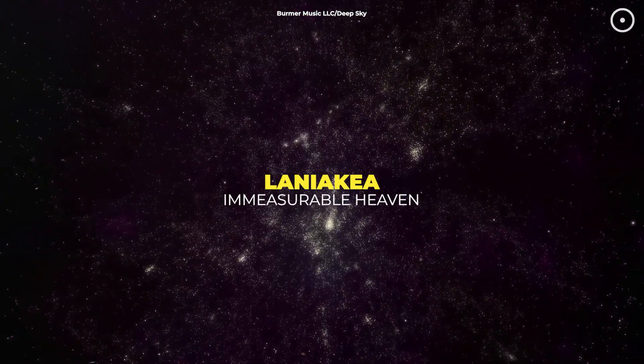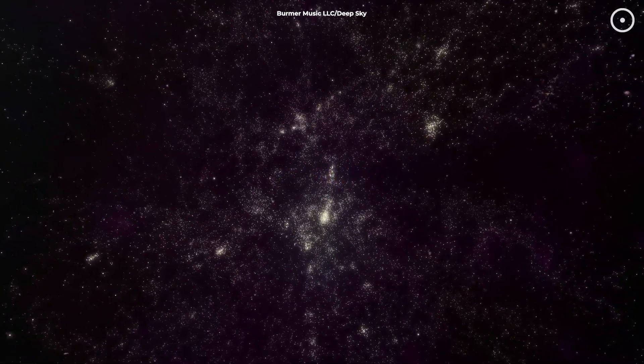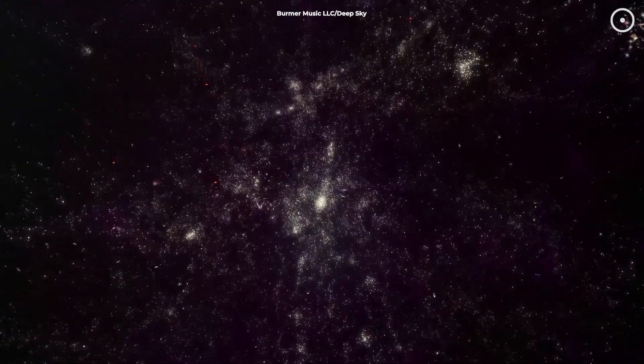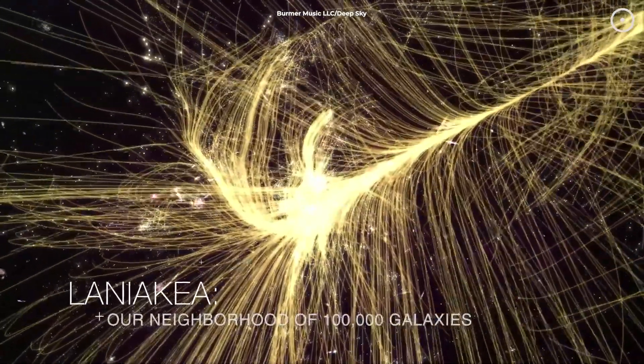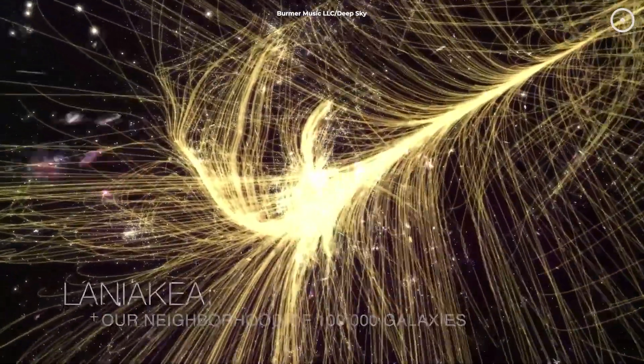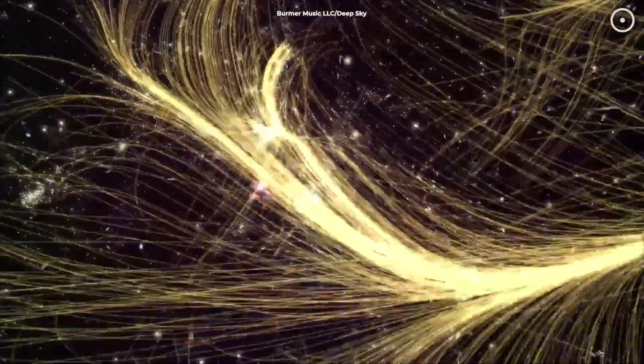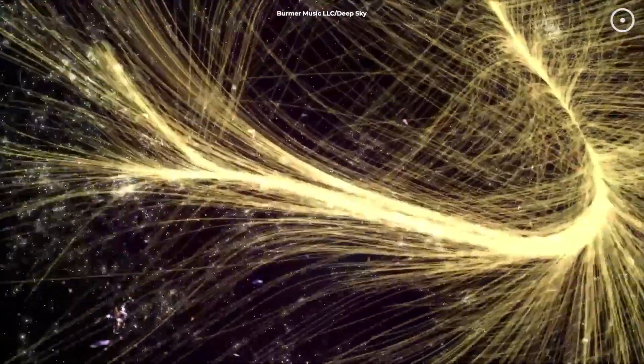In Hawaiian, it means immeasurable heaven. And trust me, they weren't exaggerating. Picture this, a hundred thousand galaxies all moving together like leaves caught in a cosmic river. And when I say big, I mean this thing stretches across 520 million light years. In Laniakea, our Milky Way galaxy is basically just a dot on the map, way out in the cosmic suburbs.